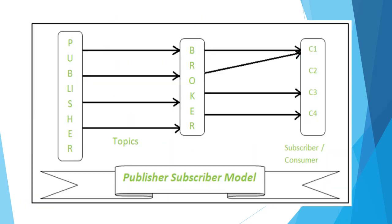Here is the diagrammatical representation of the Publisher and Subscriber model. As discussed earlier, we have three entities: Publisher, Broker, and Consumers. The Publisher prepares the topics and publishes them to the broker. The consumer who subscribes to a particular topic can get the data from the broker. This is the Publisher and Subscriber model.